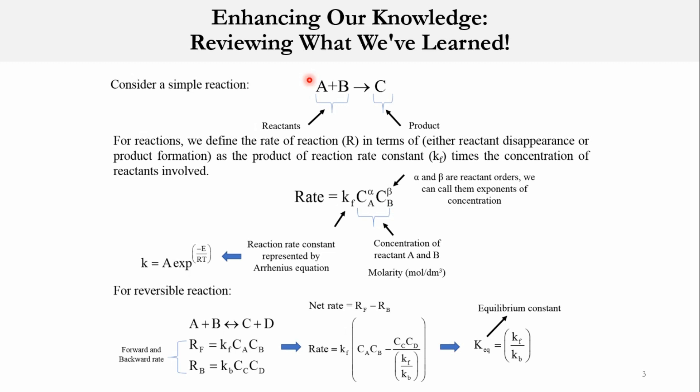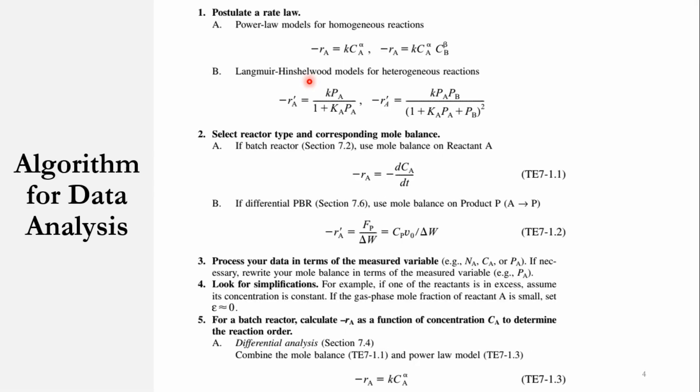And now to determine the rate parameters, which are important parameters in the calculations—or if you want to design a CSTR or PFR or PBR, these parameters are very important—so in this chapter, first we need to understand or learn how we can analyze the data. For this, we have to go through the algorithm for data analysis. First part is that we have to postulate a rate law. We have to describe whether it is a power law model or Langmuir-Hinshelwood model for heterogeneous systems. Power law model is for homogeneous systems, while LHHW models are for heterogeneous reactions.